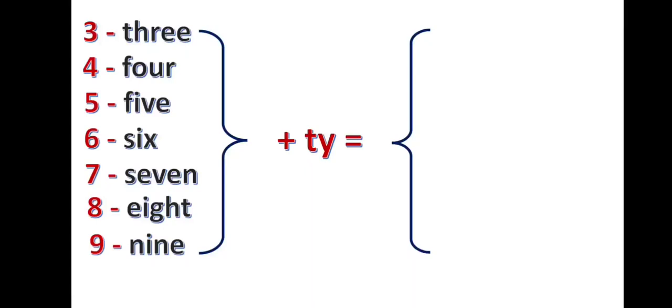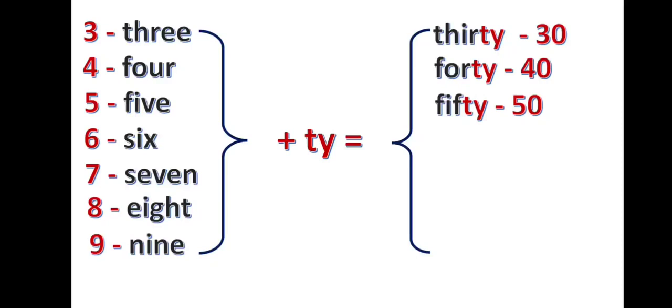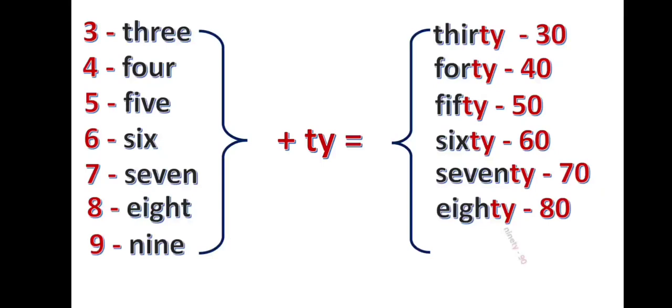Students, we can also add 'ty' to the numbers from three to nine and get new numbers. For example, three and ty is thirty. Forty. Fifty. Sixty. Seventy. Eighty. Ninety. These numbers are called decimals. We call them in Azerbaijan language 'onluklar'.